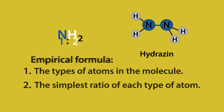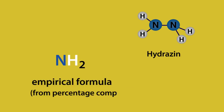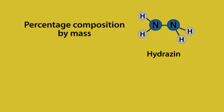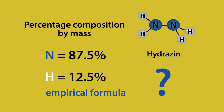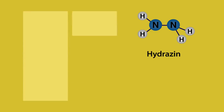The best way to find the empirical formula from percentage composition by mass is to go over a question. Upon analysis, the percentage composition by mass of a compound was found to be 87.5% nitrogen and 12.5% hydrogen. Now calculate the empirical formula. Firstly, we have a column for each element — N for nitrogen and H for hydrogen.